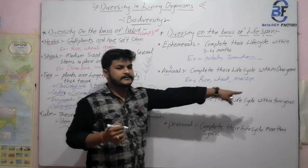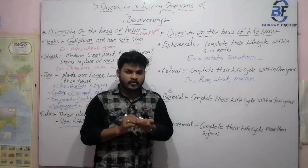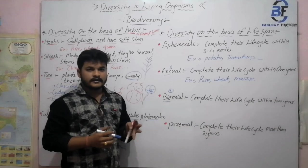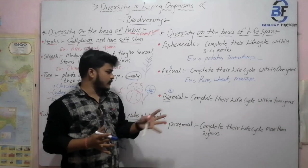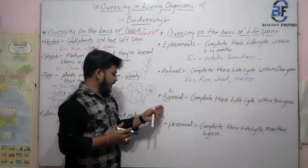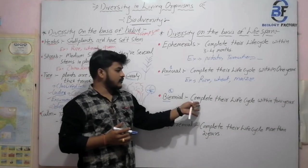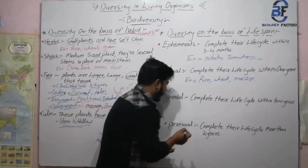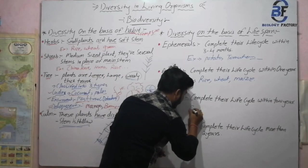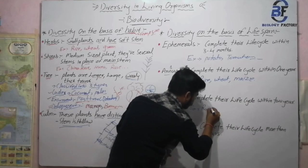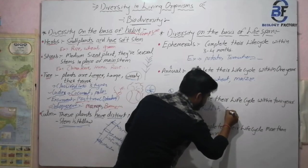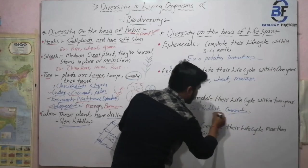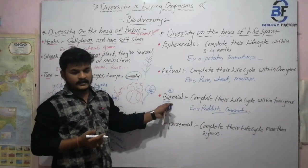Biennial means the plants complete their lifespan within two years. The basic examples of biennial plants are radish and carrot.